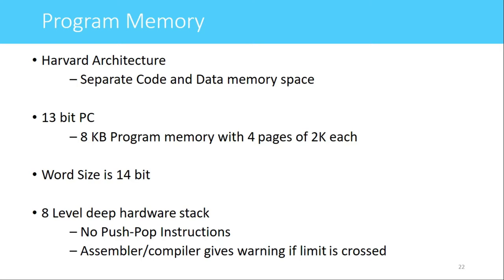The flash program memory present in PIC16F877 is 8 kilobytes. If we have an 8 kilobyte capacity memory, it requires 13 address lines for accessing that memory. So the program counter of PIC16F877 is 13 bits. This flash memory of 8 kilobytes is divided into 4 parts called pages, and each page is 2 kilobytes. The word size is 14 bits, meaning at a single location in program memory we can store 14 bits.